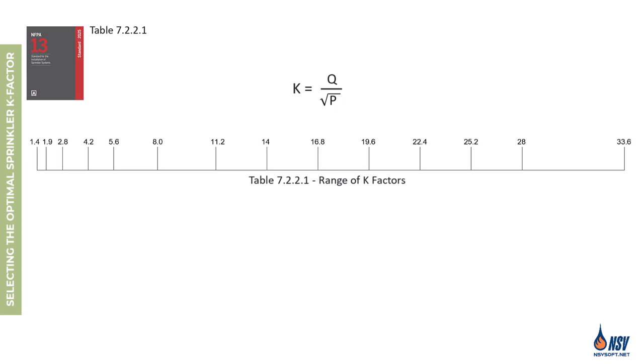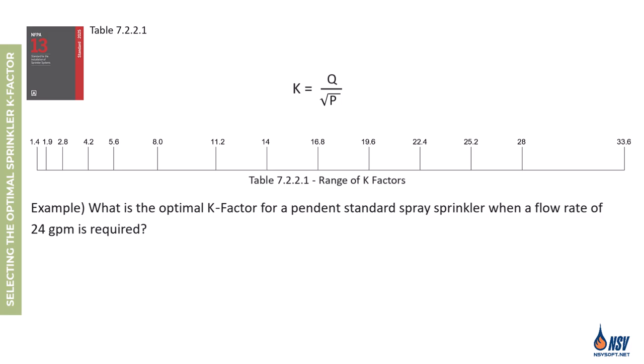To determine the optimal K factor, it can be calculated based on the required flow rate and the minimum acceptable pressure. The next step is to select the nearest smaller standard K factor value according to Table 7.2.2.1. For example, if a standard spray sprinkler requires a discharge of 24 gpm, the calculated K factor would be 9.1. Within the acceptable K factor range, this value falls between K = 8.0 and K = 11.2; therefore K = 8.0 should be selected as the optimal K factor. As reviewed in this video, selecting the right K factor is crucial — sometimes increasing it helps, other times decreasing is better. Designers must evaluate system parameters to reduce hydraulic demand and ultimately lower the system's overall cost.